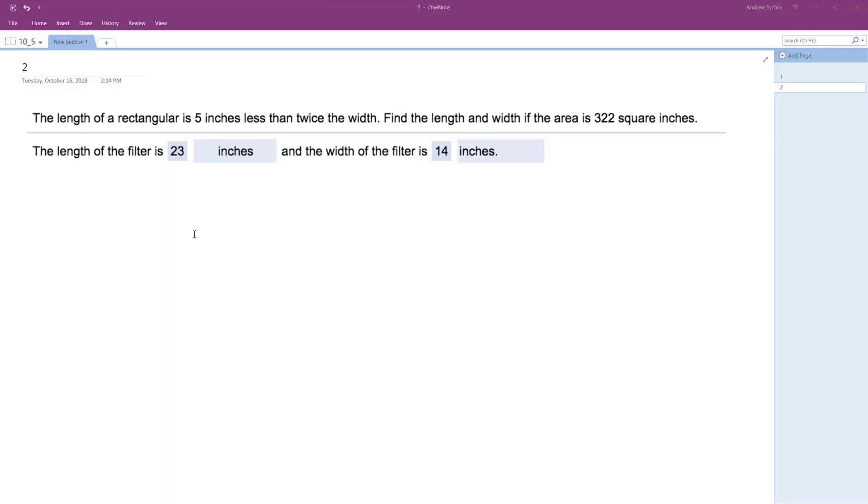All right, so the length of a rectangle is five inches less than twice the width. Find the length and width if the area is 322 square inches.